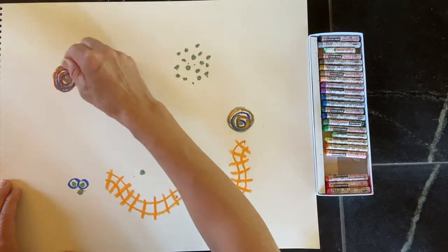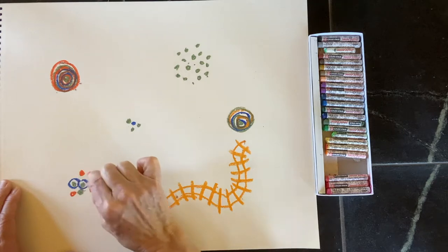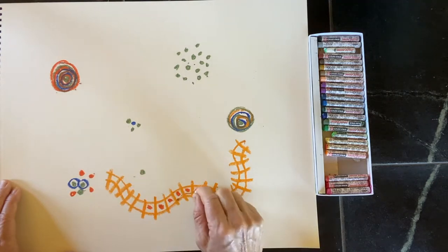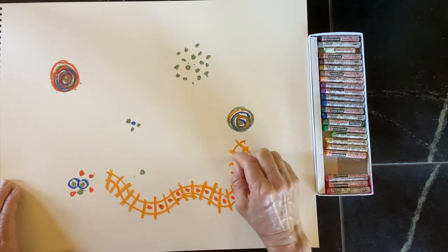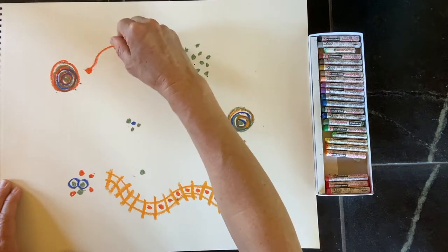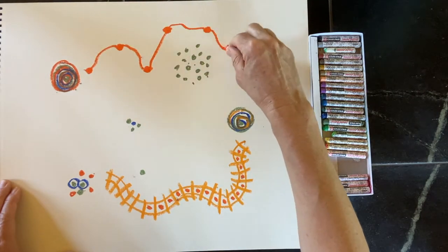One of the things that's important as I'm drawing is each time I pick up a color, I want to distribute some lines, create some lines across the composition.